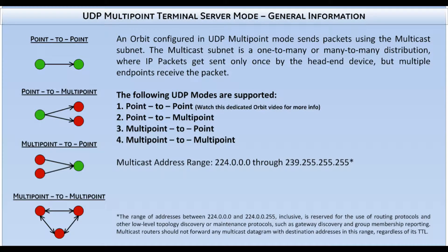The Orbit MCR has the following UDP terminal server modes: point-to-point, point-to-multipoint, multipoint-to-point, and multipoint-to-multipoint. The most basic UDP terminal server mode is point-to-point, which does not utilize the multicast subnet. If you want more information about this mode, there is a dedicated training video for UDP point-to-point. This video will cover how modes 2 through 4 operate.